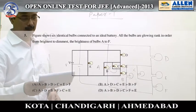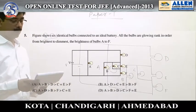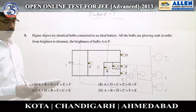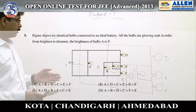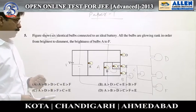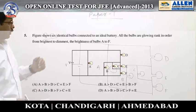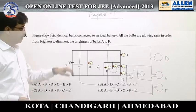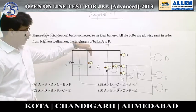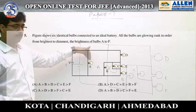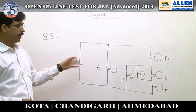Question number 5. In this question we have to compare the brightest and dimmest bulbs. The potential difference across bulb A is maximum, therefore it is the brightest.